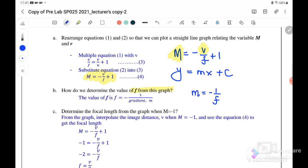Therefore, the value of f is equal to our gradient. The gradient is actually equal to negative 1 over f, so f will equal to negative 1 over m, where m is the gradient.